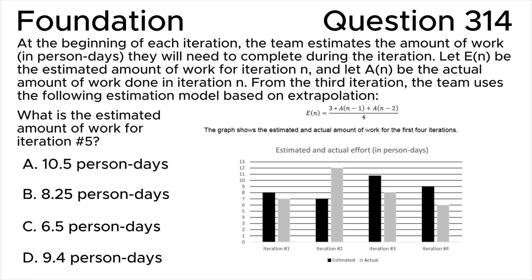A: 10.5 person-days, B: 8.25 person-days, C: 6.5 person-days, D: 9.4 person-days.